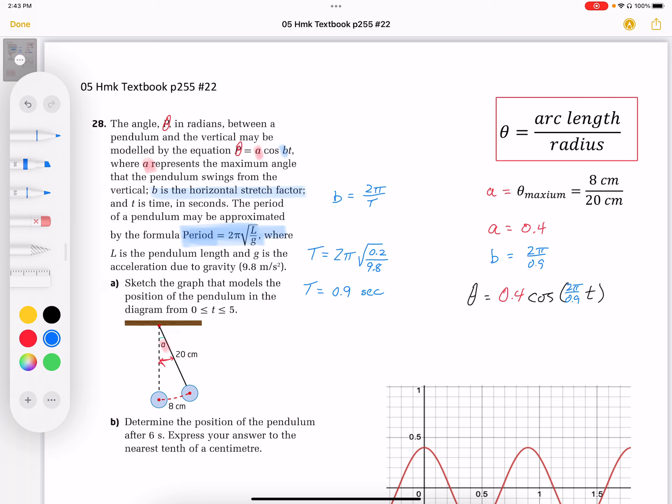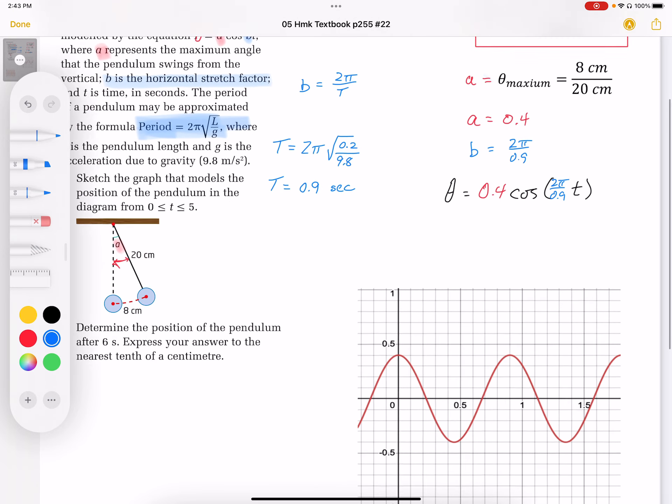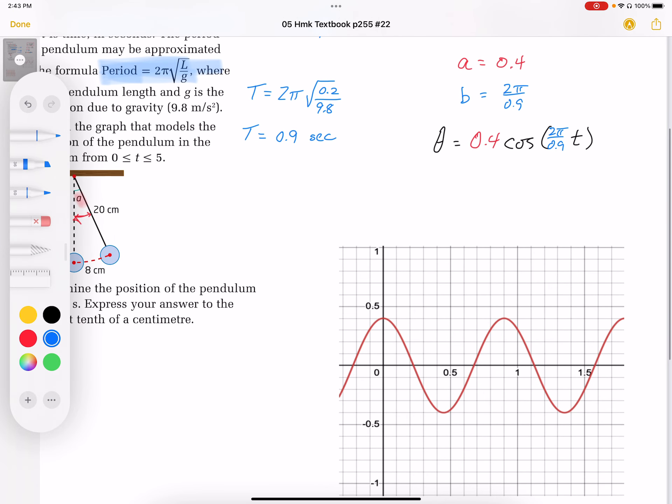So then sketch the graph that models the position. And there is the graph. So it's got a period of about from here to here. It looks like it's about 0.9.